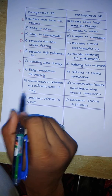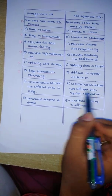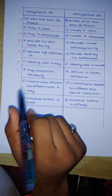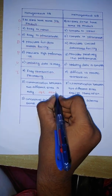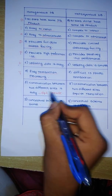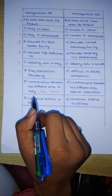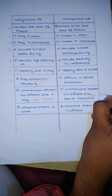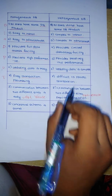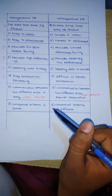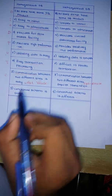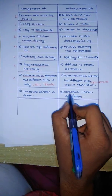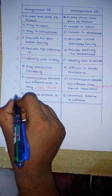Next, communication between two different sites is easy in a homogeneous database, but in a heterogeneous database it requires translation. For example, if we have SQL and Oracle databases, communicating from one SQL site to another SQL site is easy. But communicating from SQL to Oracle or vice versa requires a translator — this is a disadvantage of heterogeneous databases. The keyword is communication — C. The last difference is conceptual schema: it is the same in homogeneous, and different in heterogeneous. Keyword: conceptual schema — C.